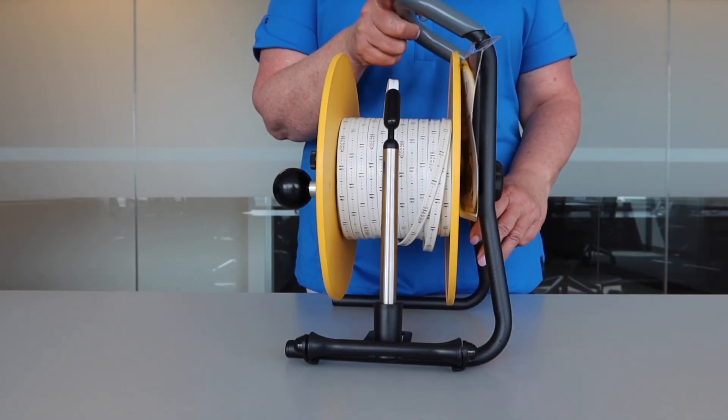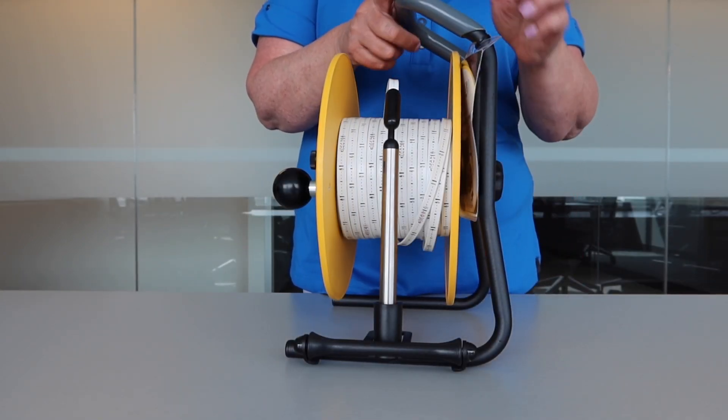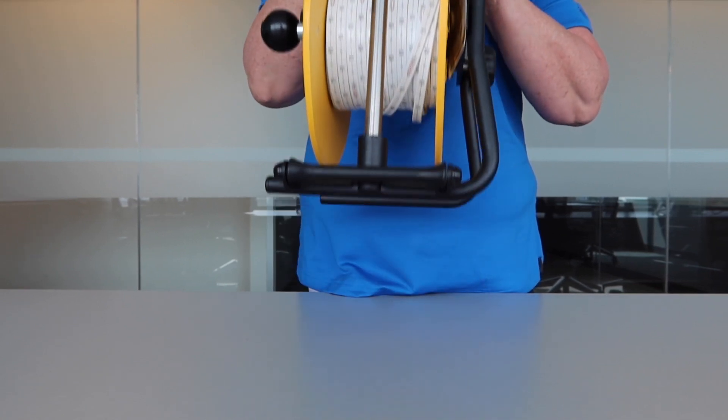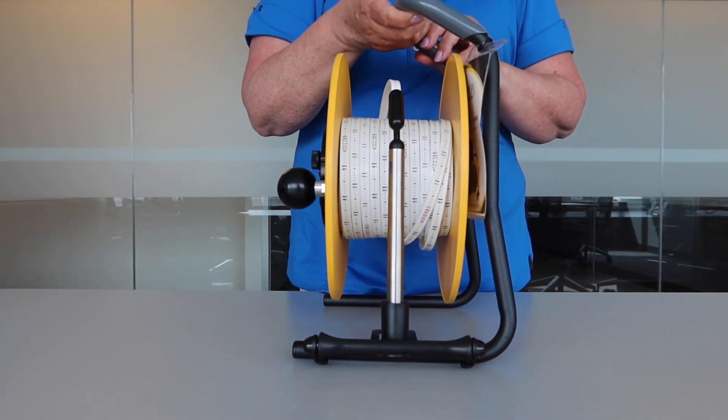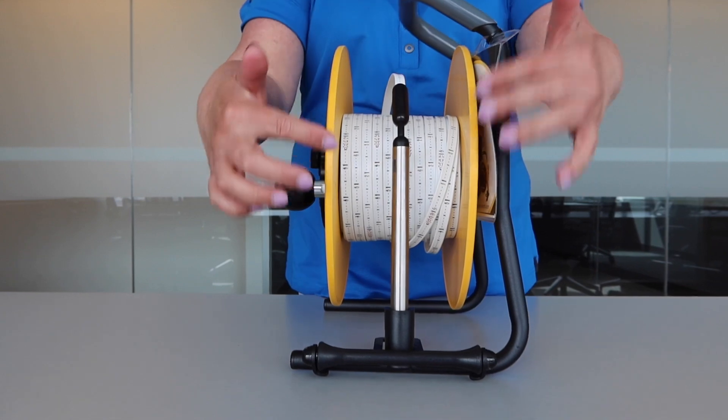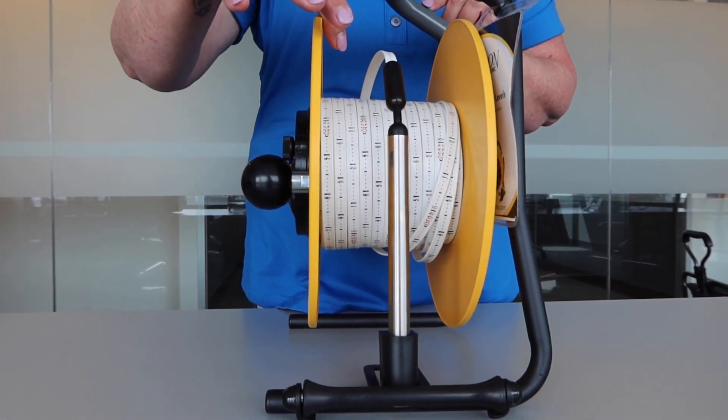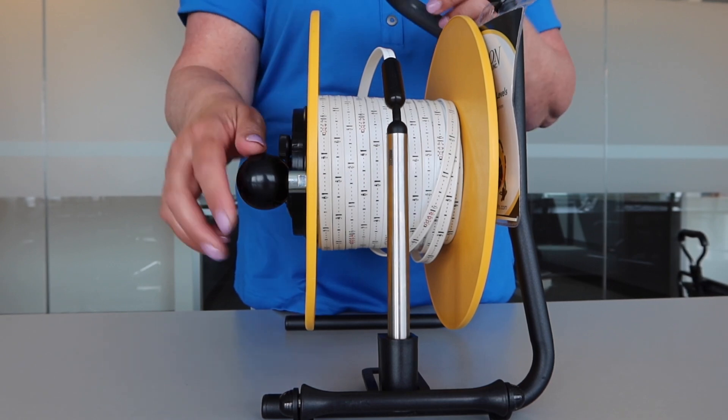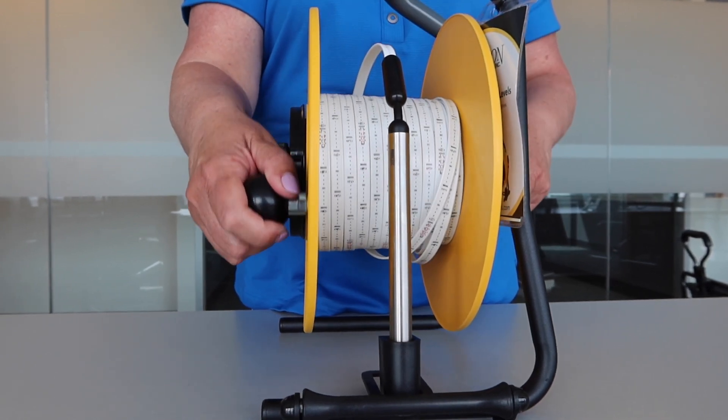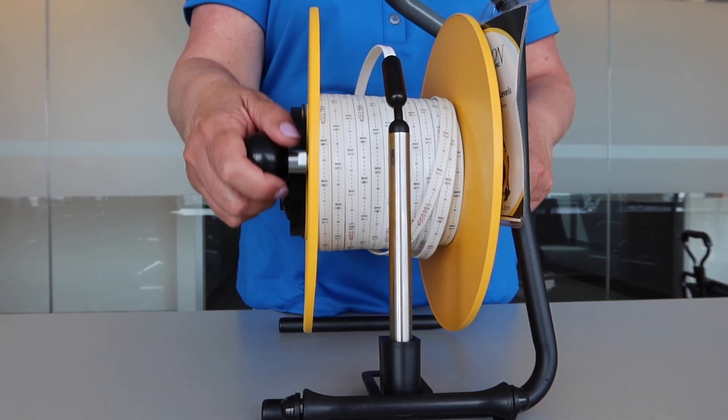Now we will go over the different features of the water tape water level meter. The powder coated steel frame with the vinyl holding grip is strong and sturdy and easy to hold. The nylon fiber composite plates are installed on a center hub with stainless steel ball bearings. This allows for smooth movement while reeling the tape up and down the well.